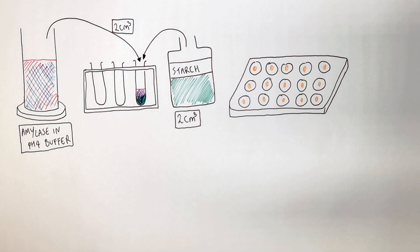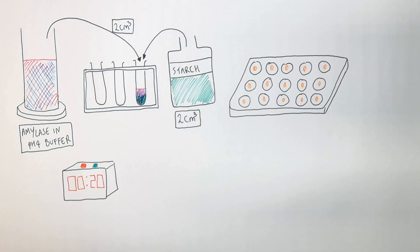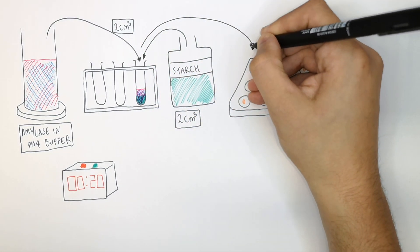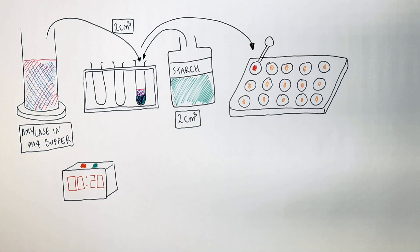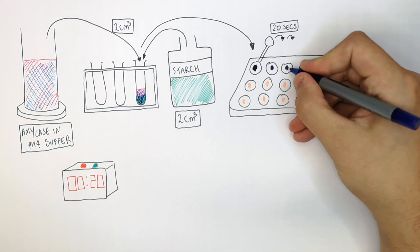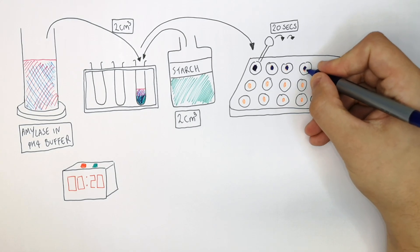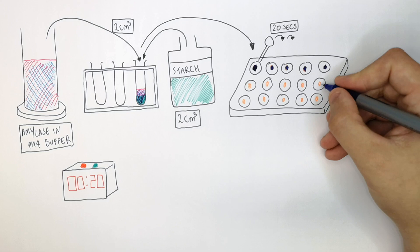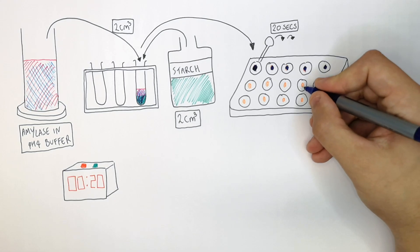At the point of mixing, start the timer. After every 20 seconds, place one drop of the starch and amylase solution into one well and observe the color change of the iodine. Continue doing this until it no longer turns blue, because if it's turning blue-black that means there is still starch present in the solution.